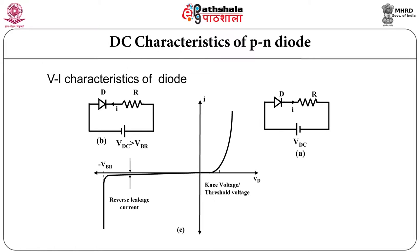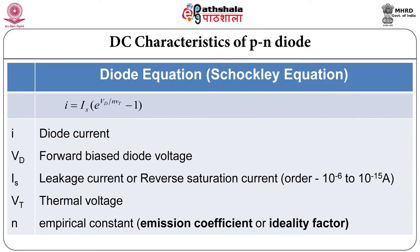After breakdown, current suddenly increases showing constant voltage characteristics, which may be destructive. All these things are explained theoretically by using the diode equation which is called as the Shockley equation.